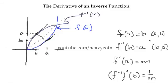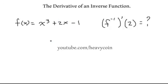The tricky part is figuring out what A is going to be. Once we get that number, the rest is easy to do. So let's look at the first example.